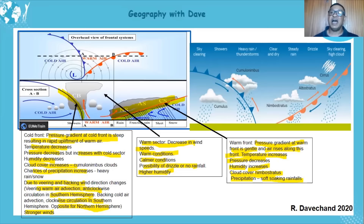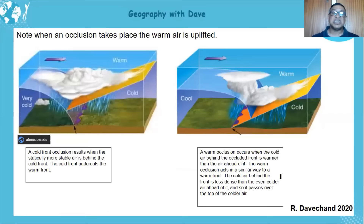Here's a diagram showing the different types of clouds — cumulonimbus shows great vertical extent with the anvil shape. That is your cross section and weather stations. Now the occluded stage — an occlusion takes place when warmer air is uplifted.